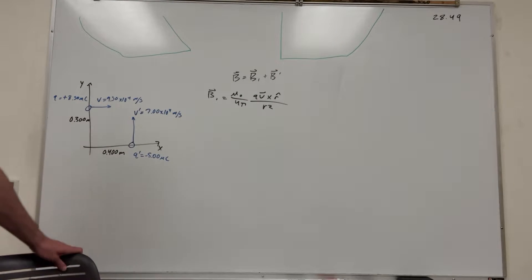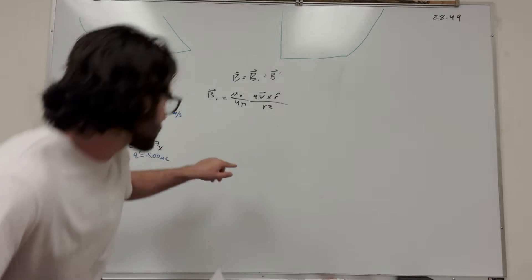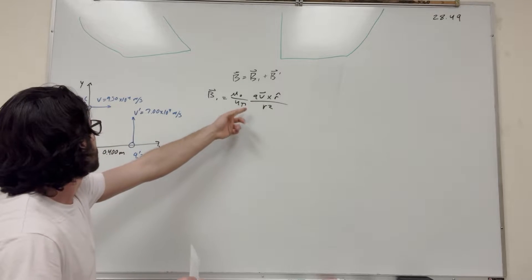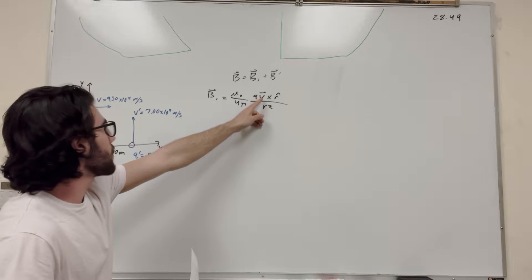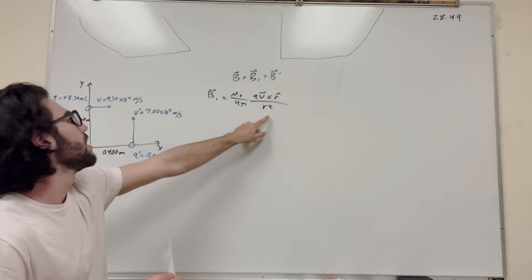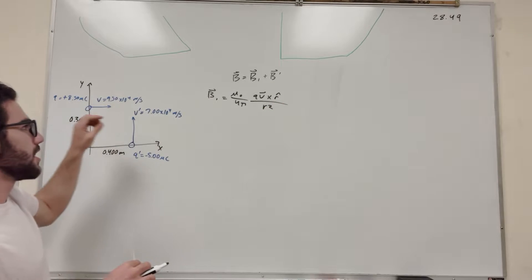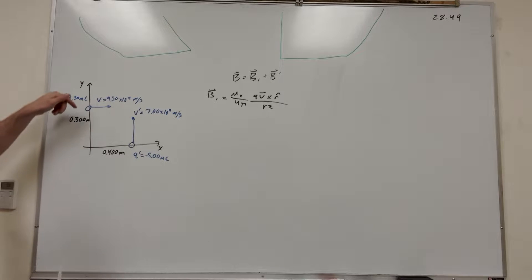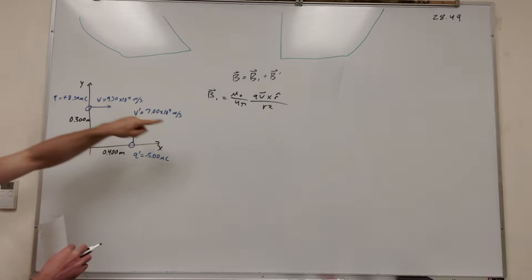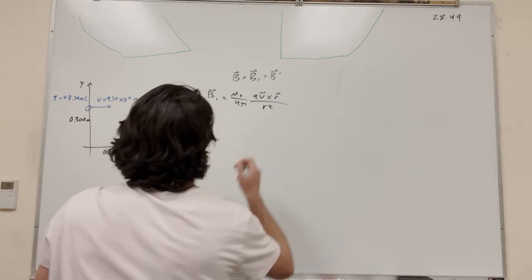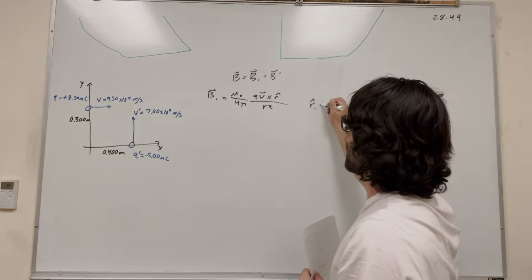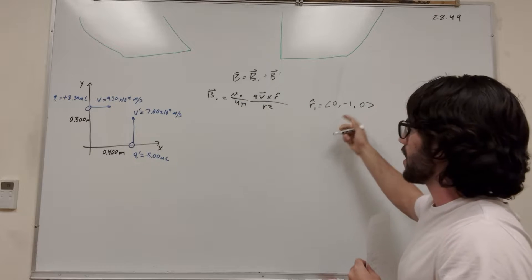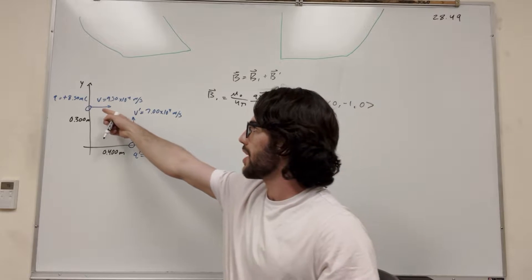Alright, so this is the equation we got. This is all our constants on the outside. Q is the charge — we know it's 8.5 times 10 to the negative 6. Then velocity — we're given velocity — and then the unit vector, and we know R. So what's this unit vector? Well, this unit vector is a vector of unit length pointing towards where we're measuring. So we're measuring at the origin, so our R-hat 1 is going to be (0, -1, 0), because it's pointing downward — we're at this point and pointing downward.